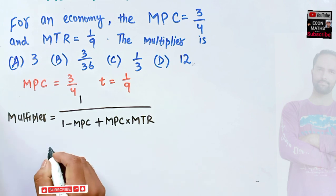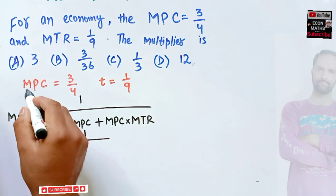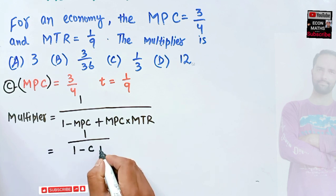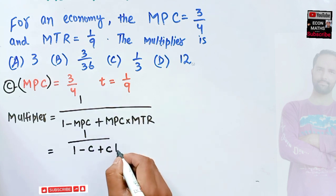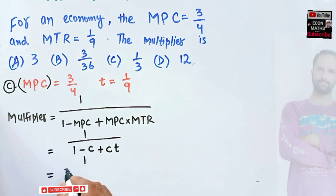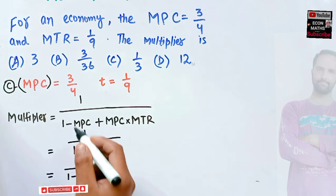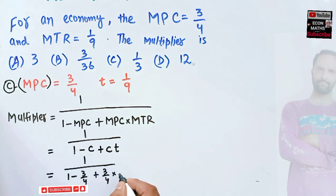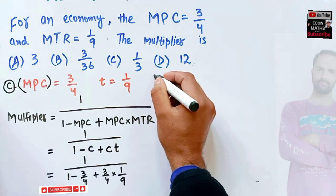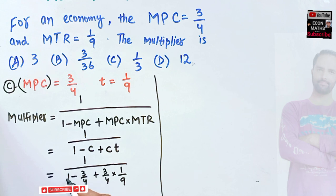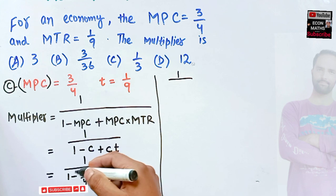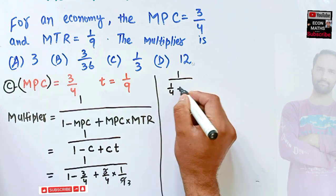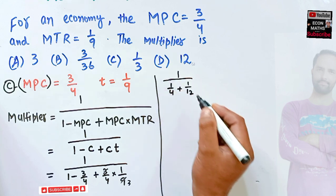We can also denote MPC by C and MTR by T. Substituting the values: the denominator becomes 1 minus 3/4 plus (3/4 into 1/9). This gives us 1/4 plus 3/36, which is 1/4 plus 1/12.